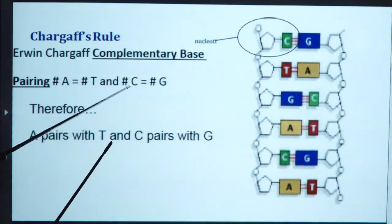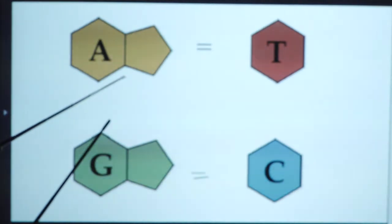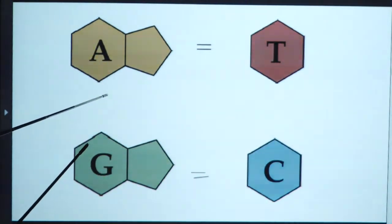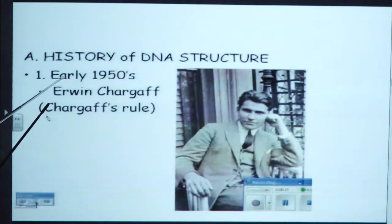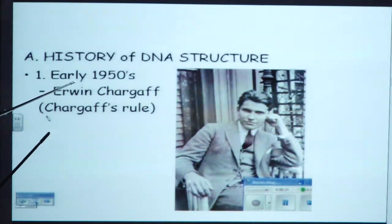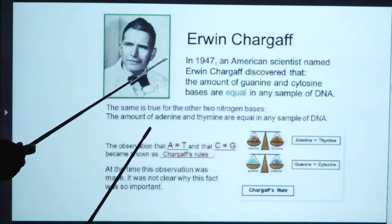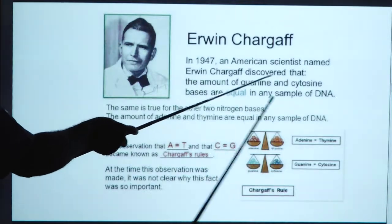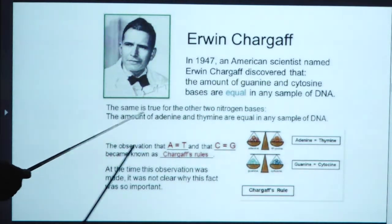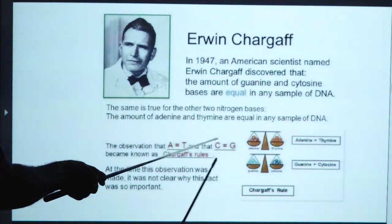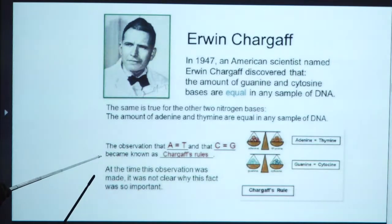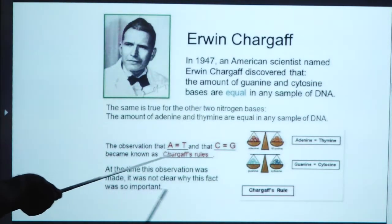According to Chargaff's rule, adenine is bonded with thymine and guanine is bonded with cytosine, so adenine equals thymine and guanine equals cytosine — meaning purines equal pyrimidines. In 1947, the American scientist Irving Chargaff discovered that the amount of guanine and cytosine bases are equal in any sample of DNA, and likewise the amount of adenine and thymine are equal. At the time, it was not clear why this fact was so important.